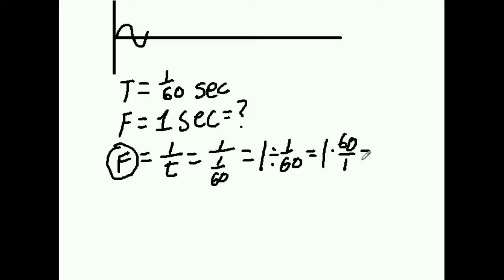1 times 60. We're multiplying out now. 1 times 60 is 60, and that's over 1, and that's going to equal 60.